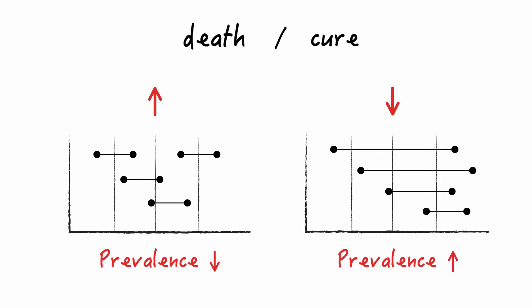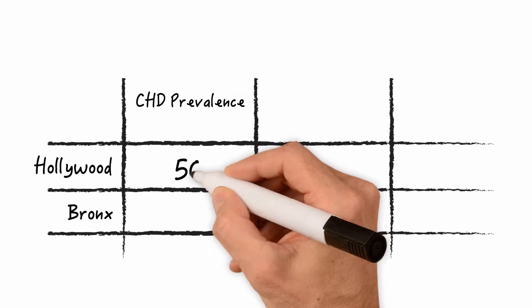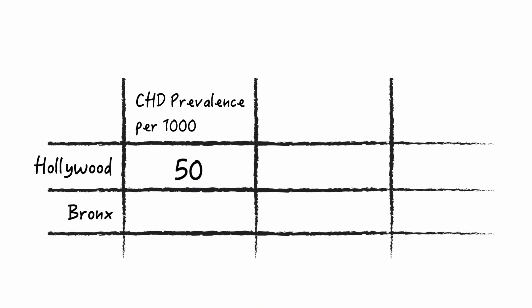Now let's use another fictitious example to clarify this point. Let's use an example of coronary heart disease in two different populations. One is the population of Hollywood. The other one is the population of the Bronx. Our fictitious Hollywood has a prevalence of 50 cases per 1000 population. The Bronx on the other hand has a prevalence of 10 per 1000. So to the person who's not familiar with the fact that prevalence is not a measure of risk but rather a measure of the burden of the disease it looks like folks from Hollywood are at an increased risk of CHD. But that conclusion is not true at all here.